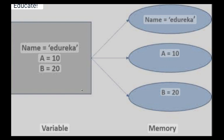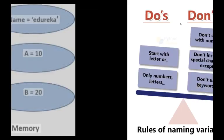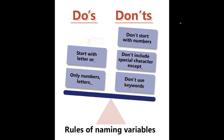Here is what the memory storage looks like: the variable name equals 'EducaRica', a equals 10, b equals 20. For naming variables, start with a letter or an underscore.